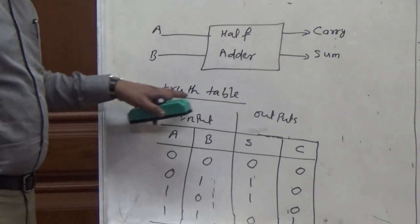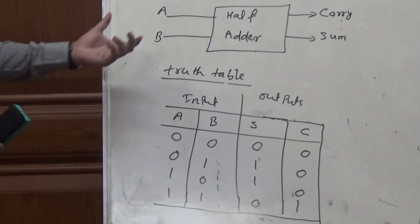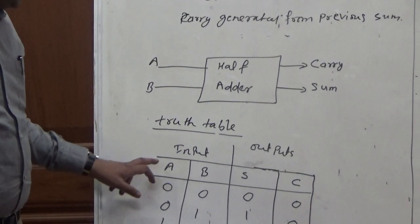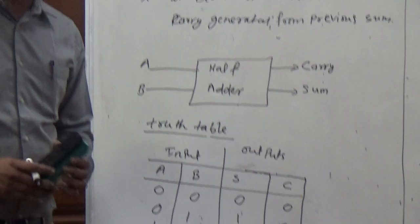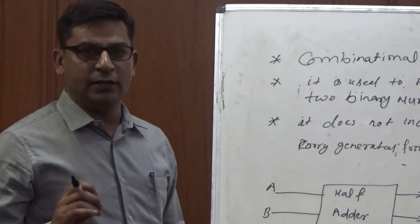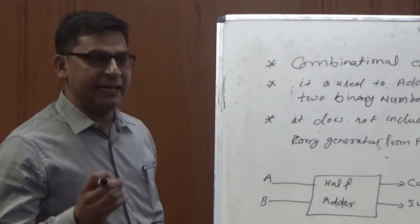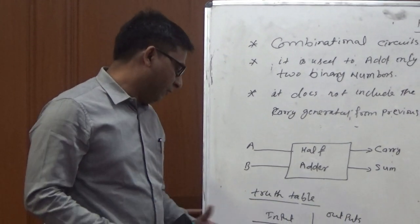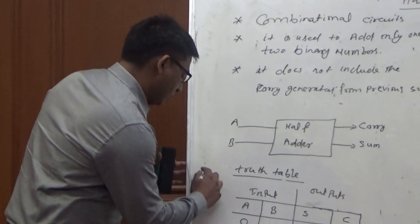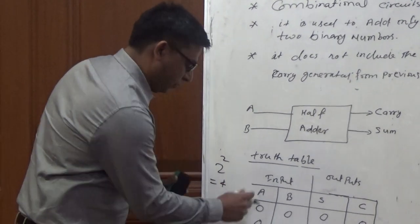First of all, we are going with the truth table. There are two inputs, A and B. The number of possible combinations is 4 because it depends on 2 to the power N, where N is the number of input variables. The number of input variables is 2, so total combinations is 4.